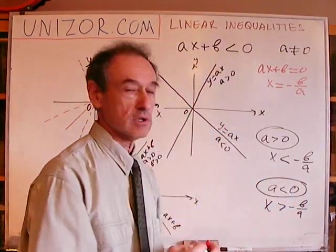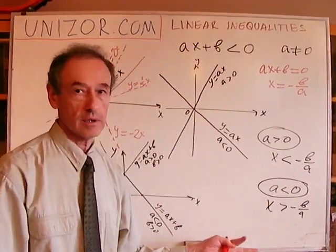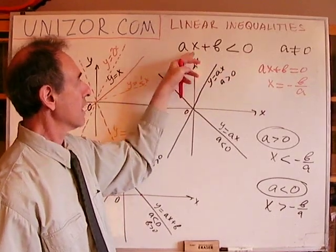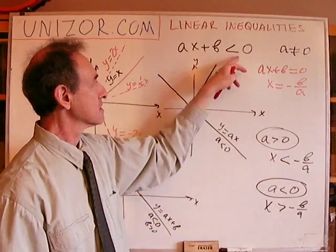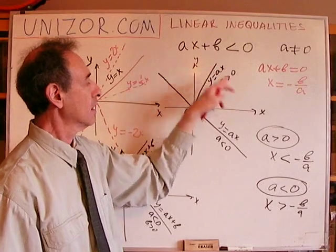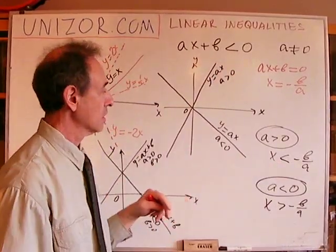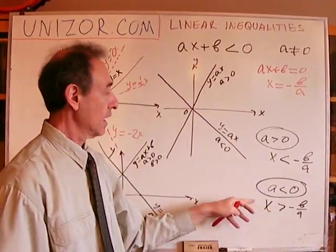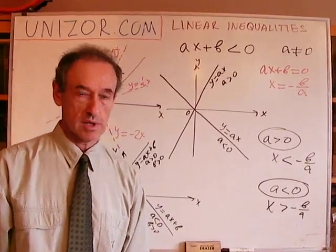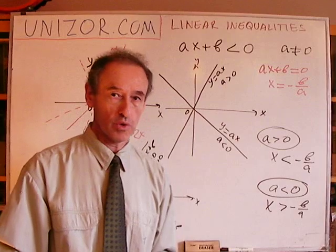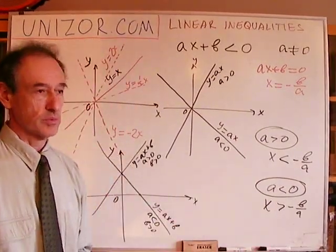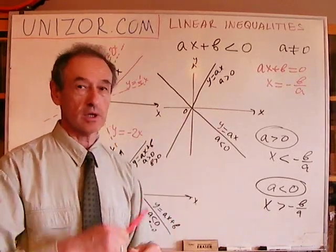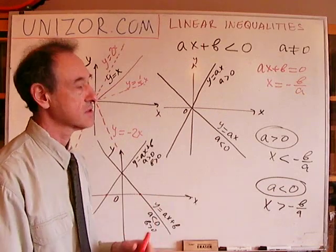From the graphical representation of the linear function, I conclude exactly the same thing I found algebraically. When a is greater than zero, I divide by a and retain the sign — less than stays less than. When a is negative, algebraically I must change the sign, and as you see graphically, it gives exactly the same result. This is another explanation of the rule we discussed before: multiplication or division of an inequality by a negative number reverses the inequality sign, while a positive number doesn't change it.